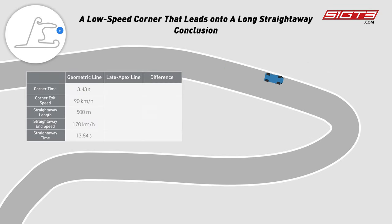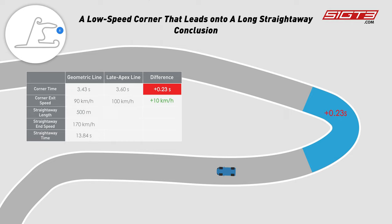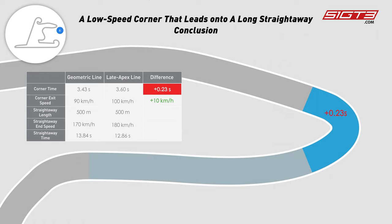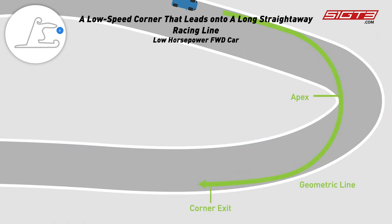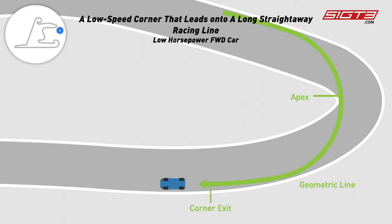Let's say we are 0.23 seconds behind if we choose the late apex line over the geometric line here, but it can give us a higher corner exit speed which decreases the lap time by almost 1 second when the car gets to the long straightaway that follows. Then again, if you are driving a front-wheel drive vehicle with low horsepower, choose the geometric line instead, because it helps you avoid speed loss when cornering and reach a preferable speed upon corner exit.